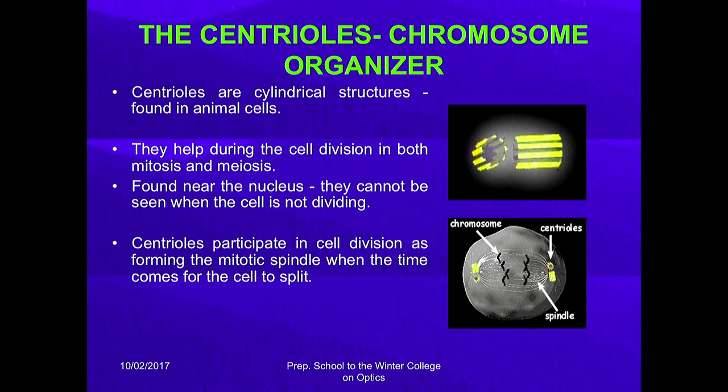The centriole is a cylindrical structure found in animal cells. They help during cell division in both mitosis and meiosis. They are found near the nucleus and cannot be seen when the cell is not dividing — centrioles are only visible when the cell is dividing.